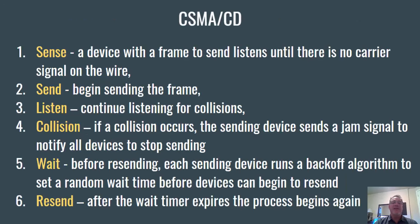Breaking CSMA/CD down into steps: first, carrier sense — a device with a frame to send listens until there's no carrier signal on the wire. Then it begins sending the frame while continuing to listen for collisions. If a collision occurs, the sending device sends a jam signal, and each sending device runs a back-off algorithm to set a random wait time. After the wait timer expires, the process begins again — sense, then send. That's the essential steps in CSMA/CD, Carrier Sense Multiple Access with Collision Detection.